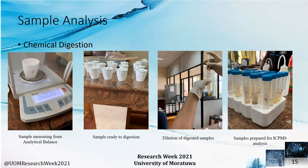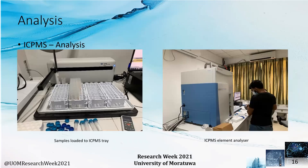Chemical digestion was carried out using concentrated HCl, HNO3, and hydrogen peroxide. After chemical digestion, the samples were diluted so that they were prepared for ICP-MS analysis. ICP-MS stands for inductively coupled plasma mass spectrometry. This instrument is used to perform elemental analysis of a substance, showing the rare earth element concentration in PPM for each of our 28 samples.